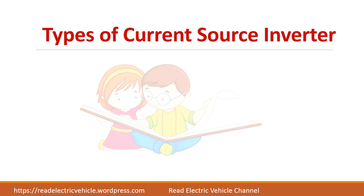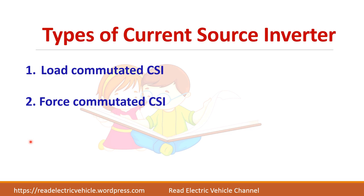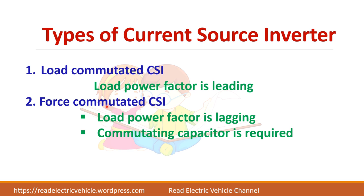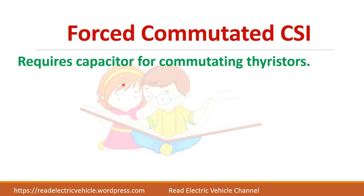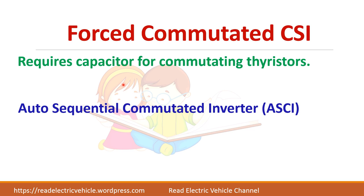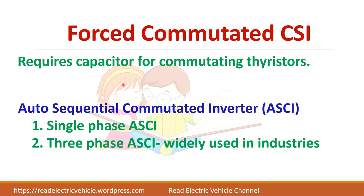There are two types of current source inverter: load commutated current source inverter and force commutated current source inverter. If the thyristors get commutated due to the nature of the load, we call it a load commutated current source inverter. If we use some external circuit to commutate the thyristors, we call it a force commutated inverter. In a current source inverter, a capacitor is sufficient to commutate the thyristors. The autosequential commutated current source inverter is the widely used type, available in single phase and three phase, with three phase being widely used in industries.